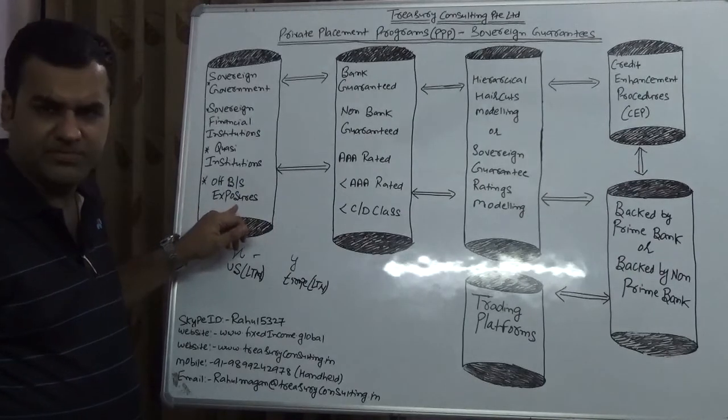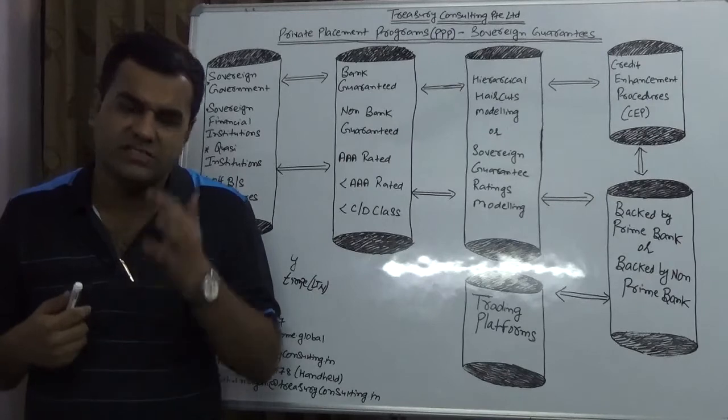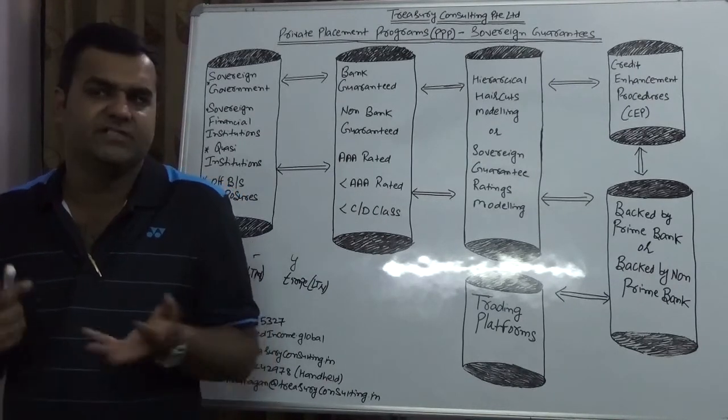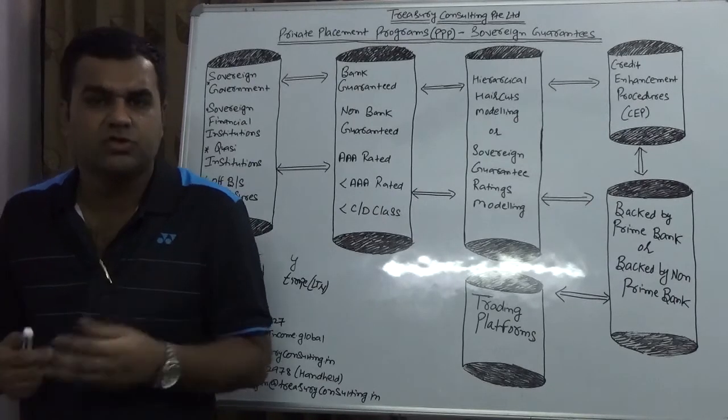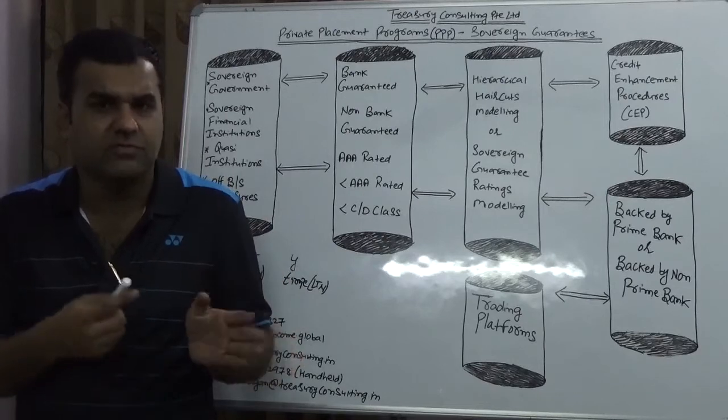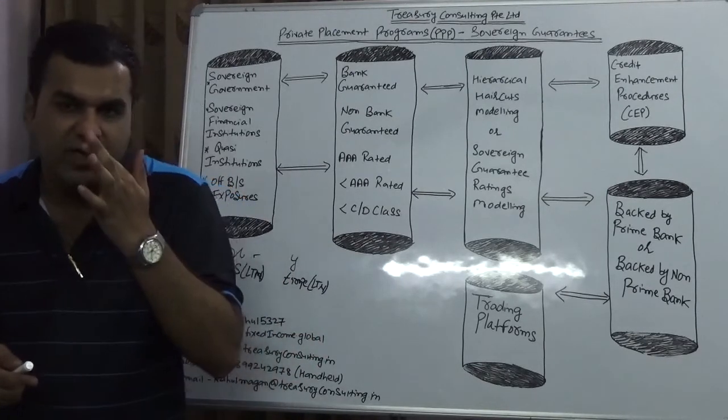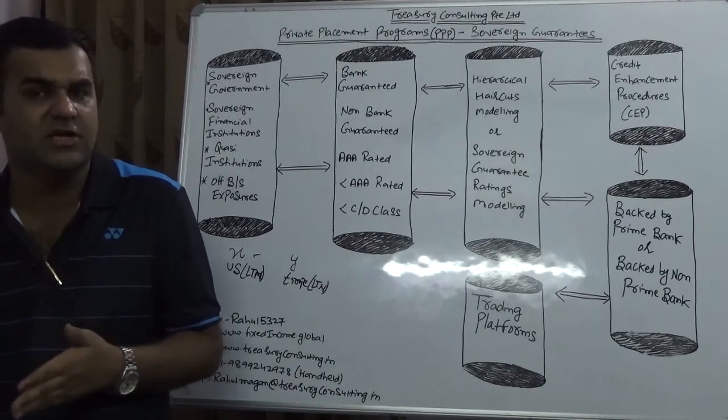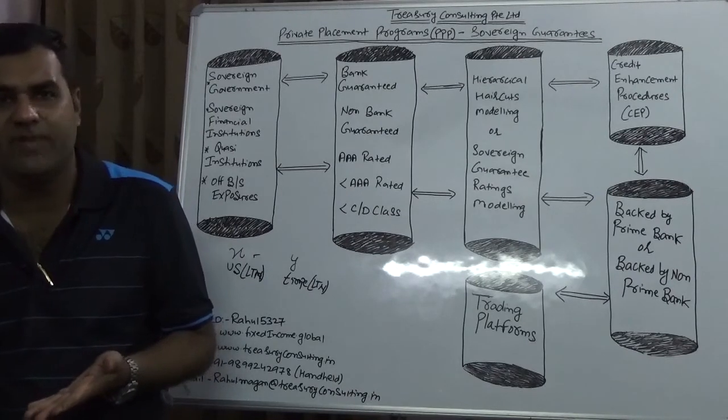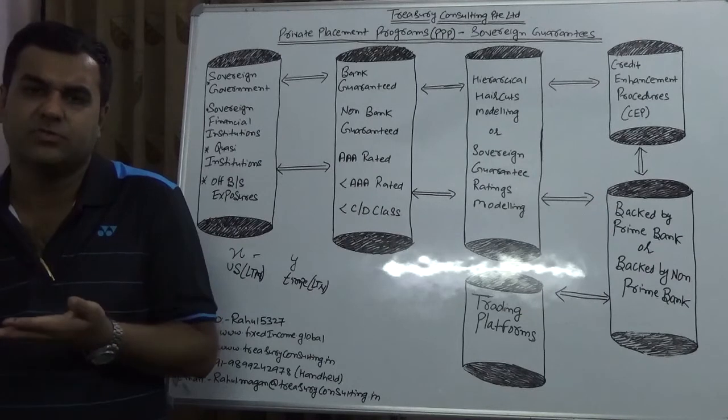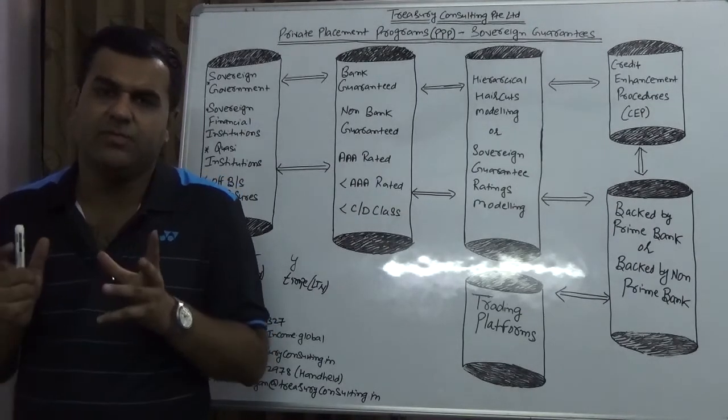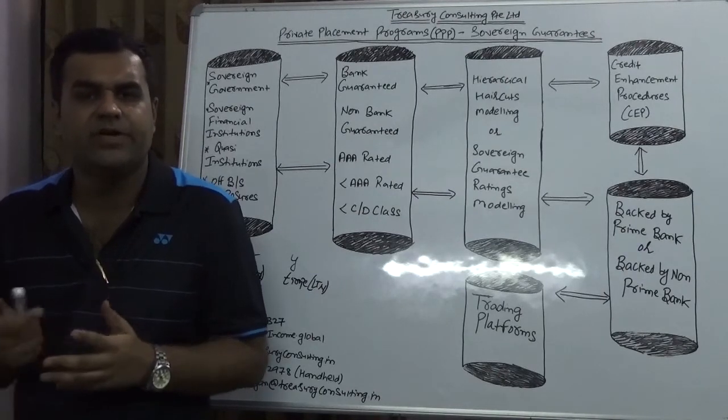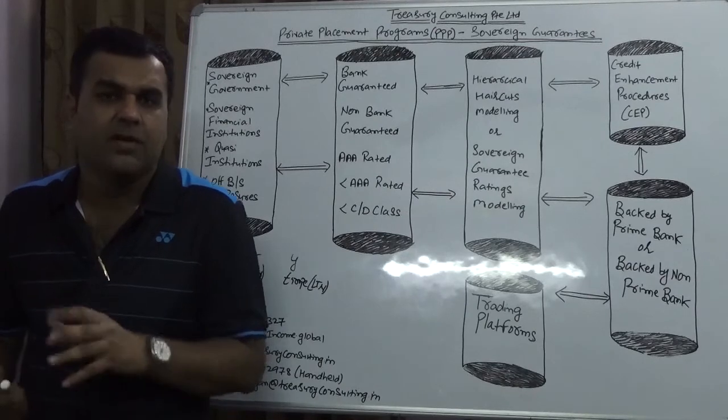If today DBS will issue any security, then Singaporean government has a say because ultimately responsibility is on the Singaporean government. Then you have off balance sheet exposure. Generally from off balance sheet exposure, the human mind goes to letter of credit, trade finance, bank guarantee. But on the contrary, you should know that every year there's a report which comes after Davos sharing the best data on off balance sheet exposure, and trust me, US is the only country who has humongous amount of off balance sheet exposure. When we talk about PPP trade, we need to appreciate not only on balance sheet but also off balance sheet exposure can be traded. Both can be traded.